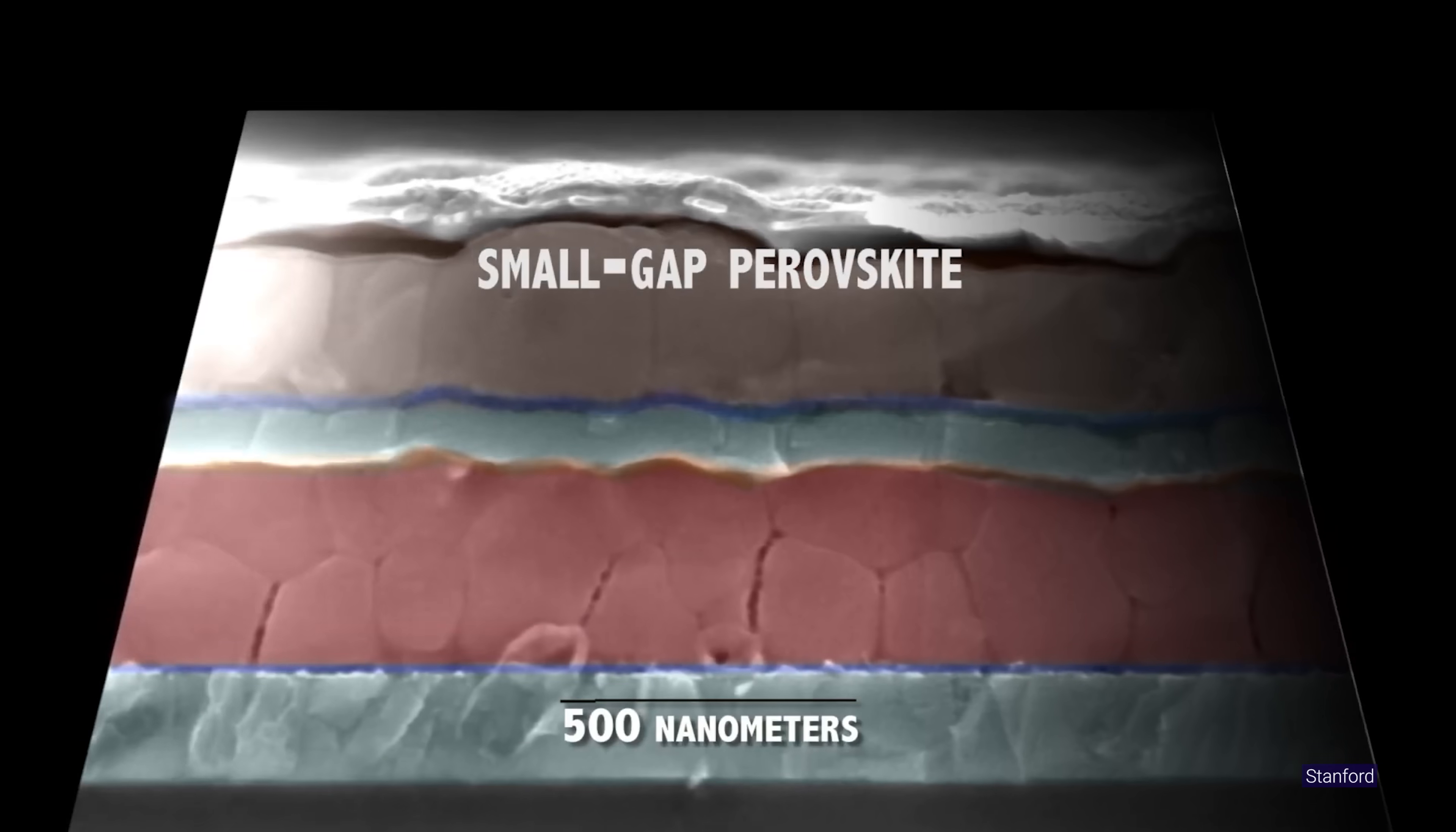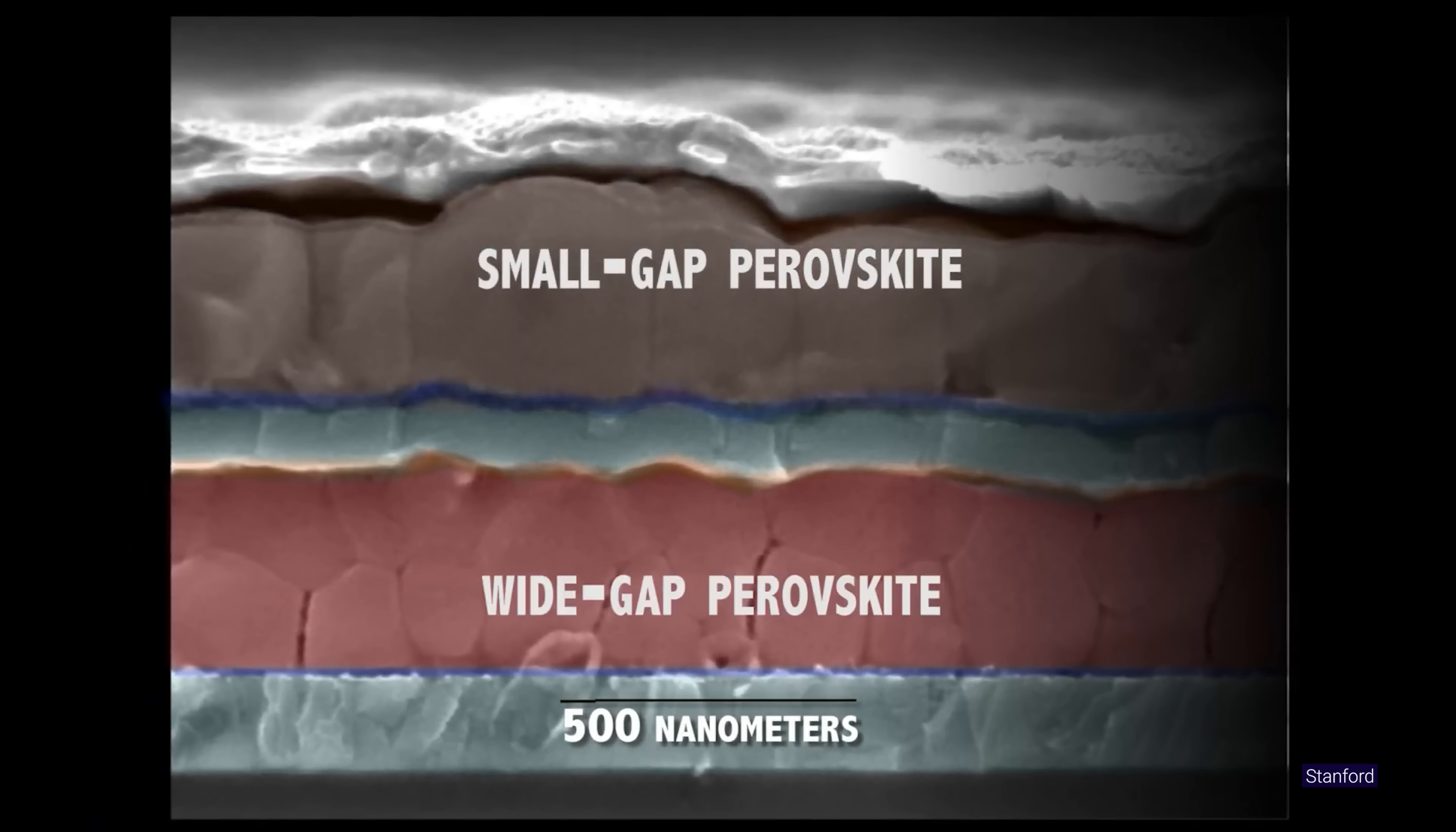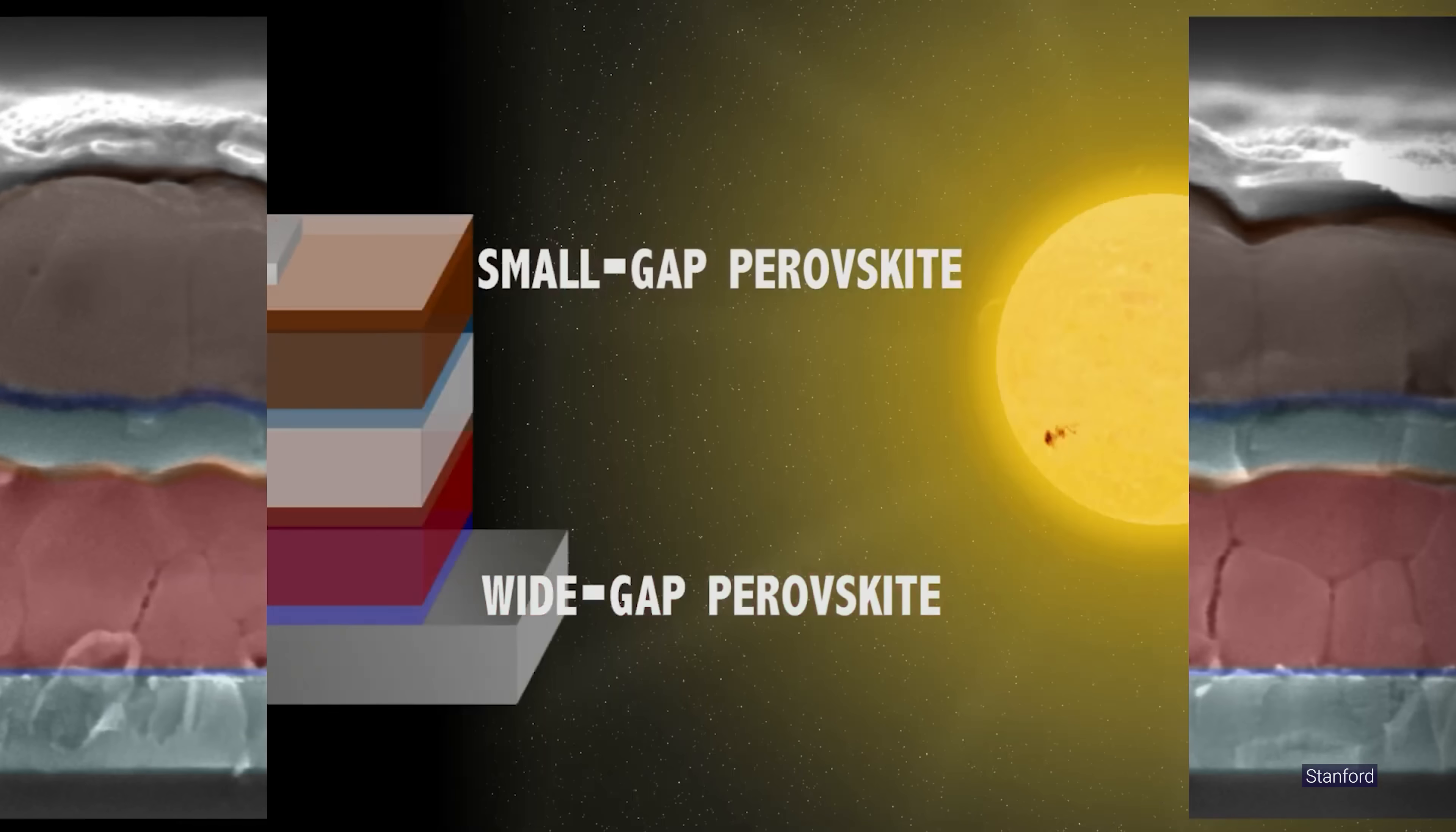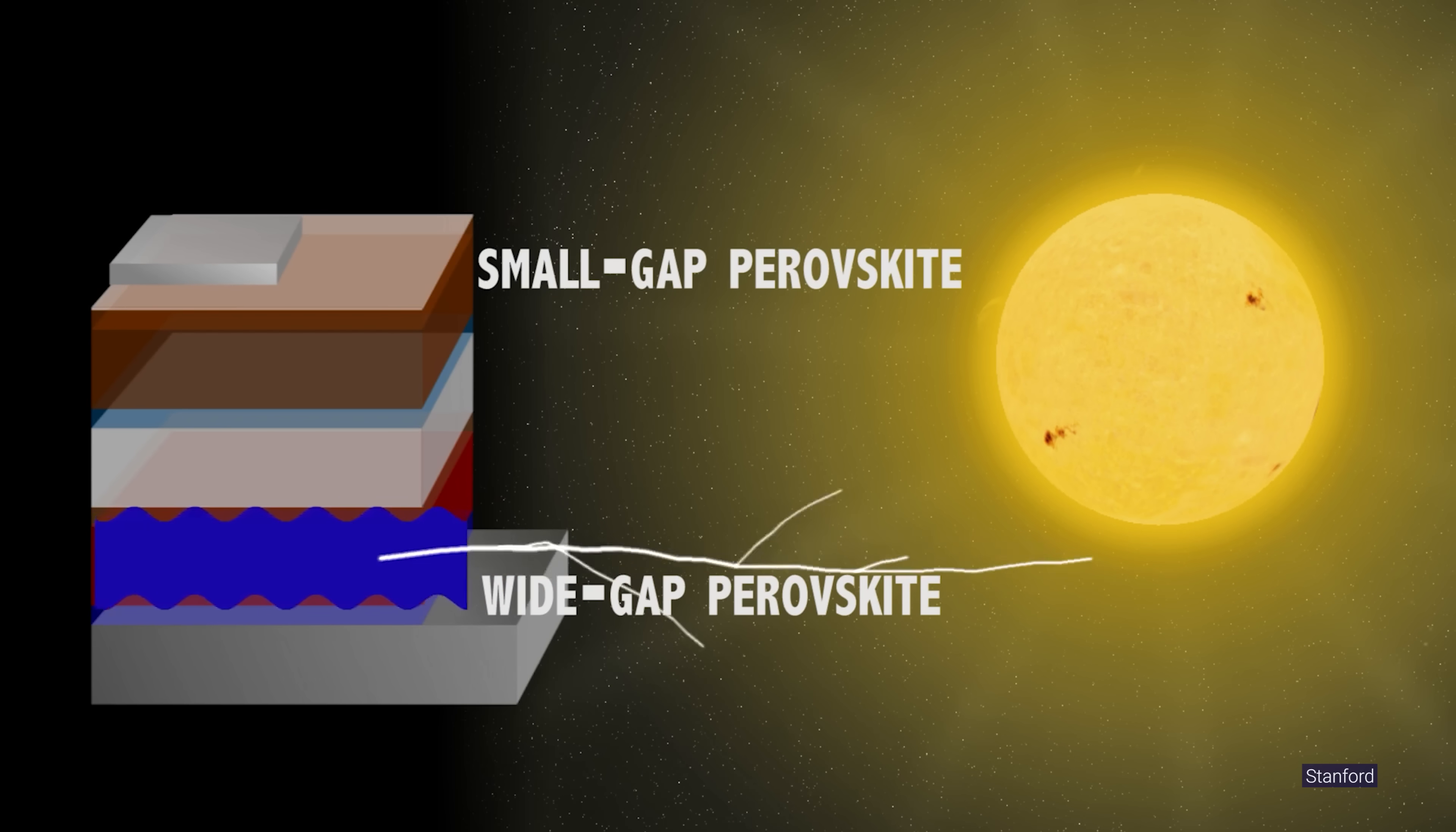This means much of the energy in sunlight goes to waste when it hits a single-junction solar cell. But because the bandgap of perovskites can be easily changed, you can stack perovskite layers on top of each other that are chemically tuned to absorb different parts of the solar spectrum. This results in a solar cell with multiple p-n junctions that can produce electricity from a broader range of light wavelengths or extract more energy from each photon, improving the cell's efficiency.